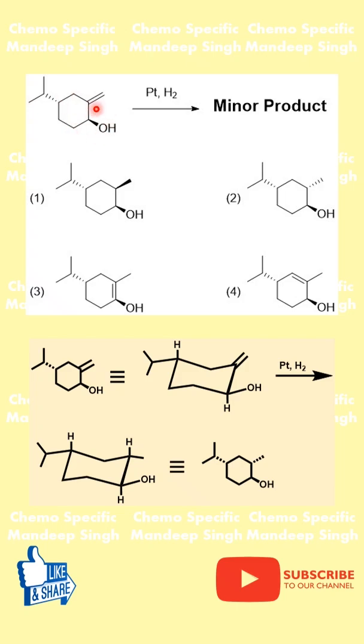In this problem, we have this exoalkene undergoing reaction with platinum and hydrogen. This is an example of catalytic hydrogenation in which the double bond is getting reduced.